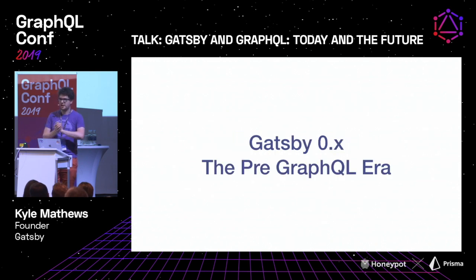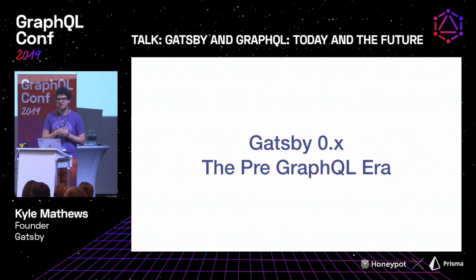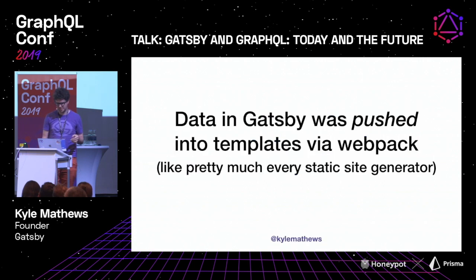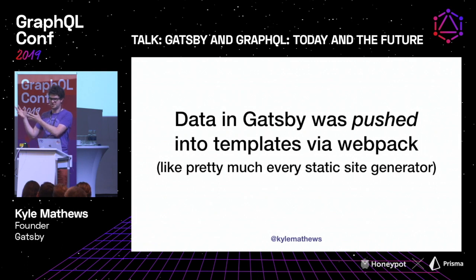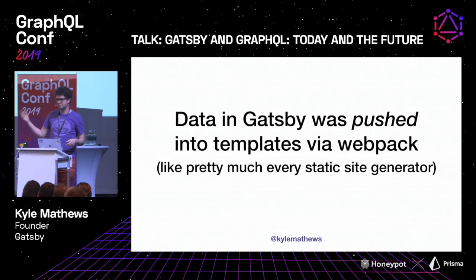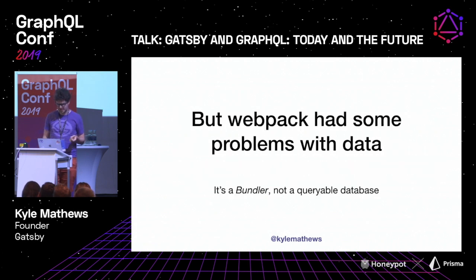Let's take a step back. How did we get to Gatsby and GraphQL? The pre-GraphQL era was Gatsby 0.x. When I first started Gatsby, I was thinking React is awesome — it would be really cool to build a website with React. It worked basically like any other static site generator: you had React template pages and markdown files that got run through the markdown template. It was pretty simple, worked really well, fit a lot of people's needs, but it had a lot of limitations.